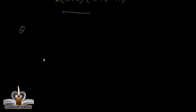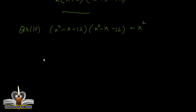Question number 4، fourth part، which is (x²-x-12)(x²-x-12) minus x²۔ یہ shape اسی طرح نظر آ رہی ہے — x²-x دونوں جگہ نظر آ رہے ہیں۔